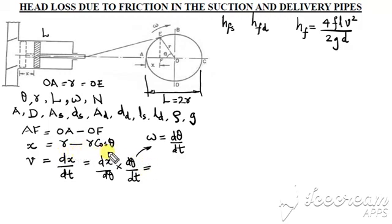Since r is a constant, you get 0 minus r cos theta derivative with respect to theta, which is r sin theta.